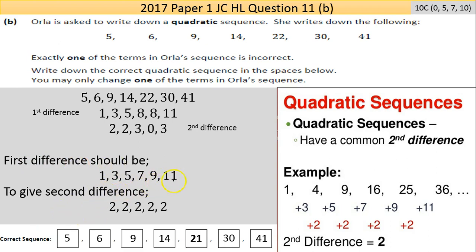So the first difference should be: I've gone up 1, 3, 5, 7, 9, 11 to give a common difference of 2 all the way across. So how would we achieve that by changing just one number?